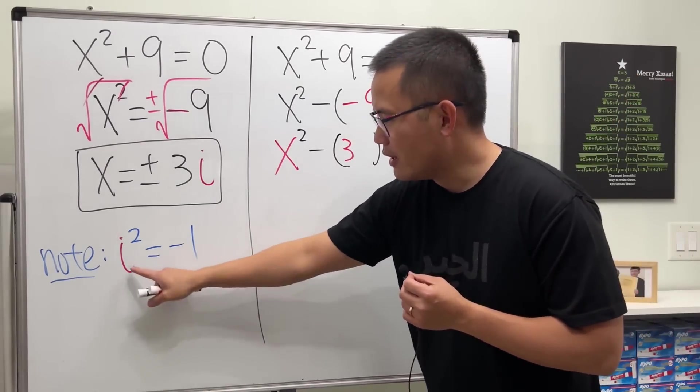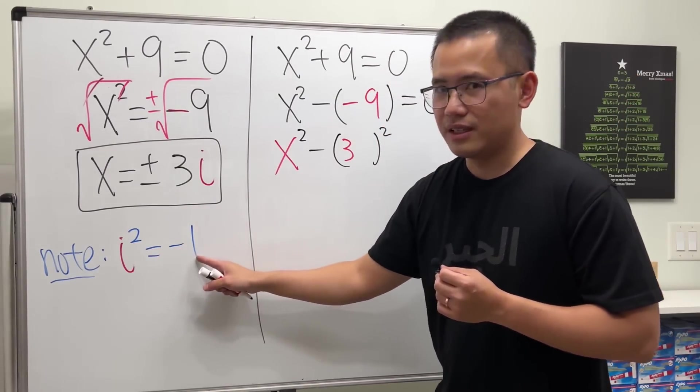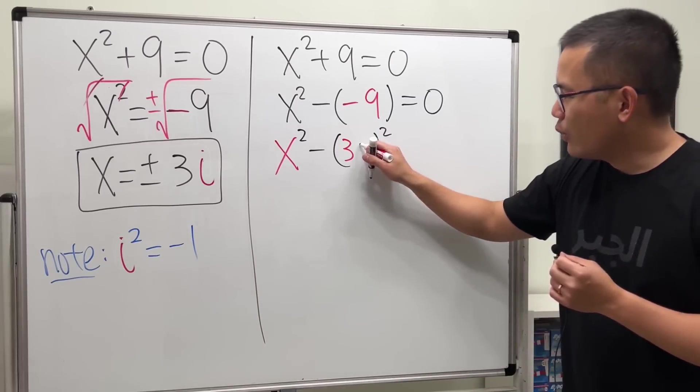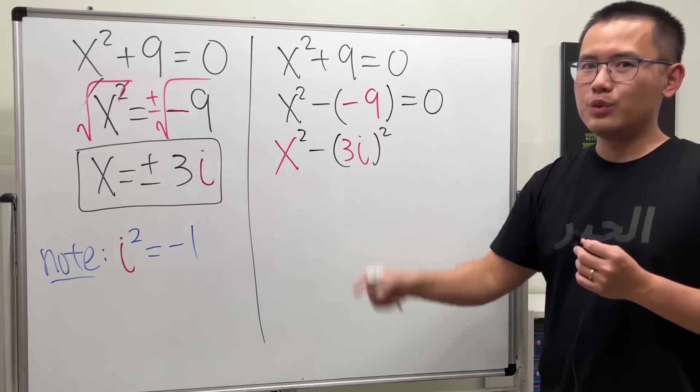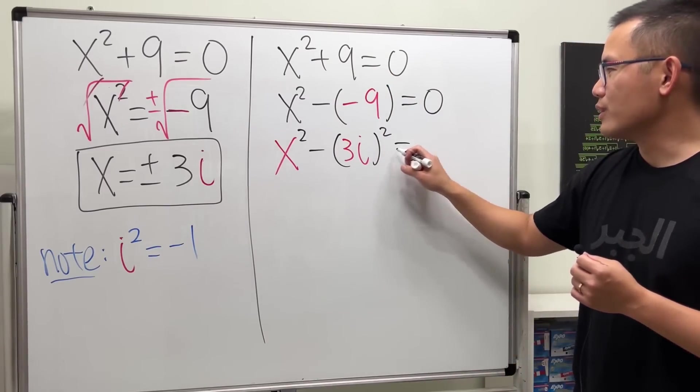Well, the answer is this right here. i squared gives us negative 1. So, if I also put in the i right here, i squared will give us the negative 1 that we need. And that is, of course, equal to 0.